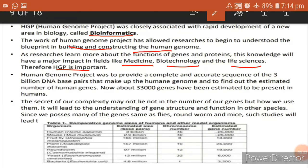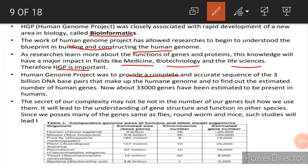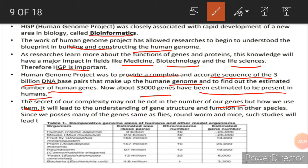The human genome project aimed to provide a complete and accurate sequence of the 3 billion DNA base pairs that make up the human genome and to estimate the number of human genes — about 33,000 genes have been estimated to be present in humans. The secret of human complexity may lie not in the number of our genes but in how we use them. These studies will also lead to a greater understanding of human evolution, since we share many genes with flies, roundworms and mice.